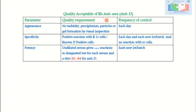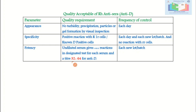Quality control of Rh anti-sera (anti-D / NTD): for appearance, there should be no turbidity, precipitation, particles, or gel formation by visual inspection each day. For specificity, there should be a positive reaction with R1R cells (RhD-positive cells) and a negative reaction with RhD-negative cells — checked each day and with each new lot or batch. For potency, test the undiluted serum — it must give at least 3+ reactions in designated tests. For titer, the acceptable range is 1:32 to 1:64 for anti-D.